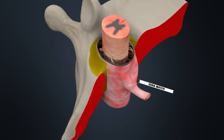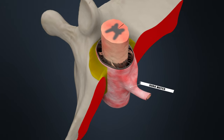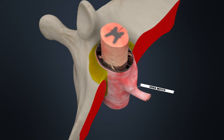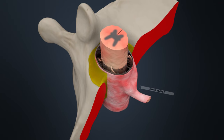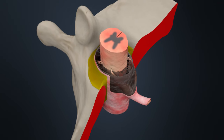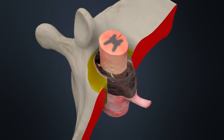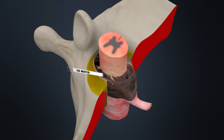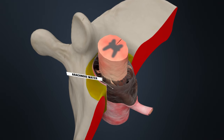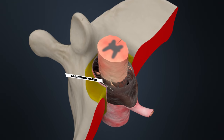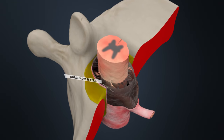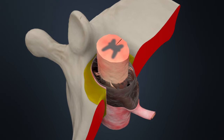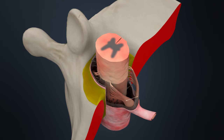The outer membrane of the spinal cord is called dura mater. The arachnoid mater is located directly under the dura mater, and is connected to the pia mater via arachnoid trabeculae.